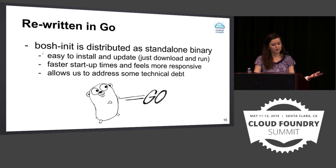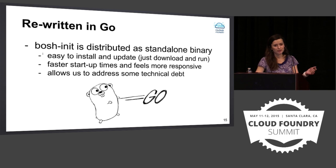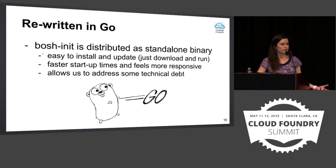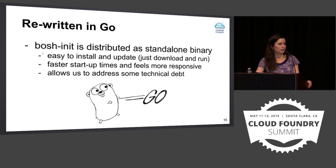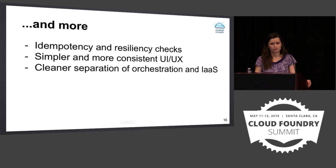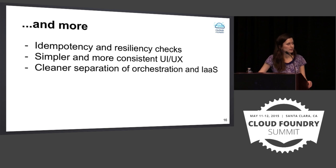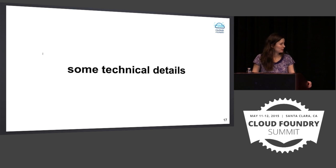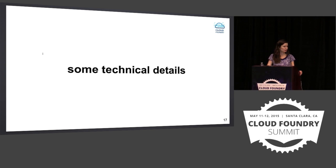We rewrote the BOSH init CLI in Go, which gives us several advantages. It's now distributed as a standalone binary - very easy to install compared to the previous BOSH micro CLI plugin which was a gem where you had to resolve all these gem conflicts. Now you just download it, put it in your path, and run it. It's faster to start up and feels more responsive. As always with a rewrite, it allows us to address some technical debt. It's more idempotent, has a more consistent UI, and there is a cleaner separation of deployment workflow and infrastructure management.